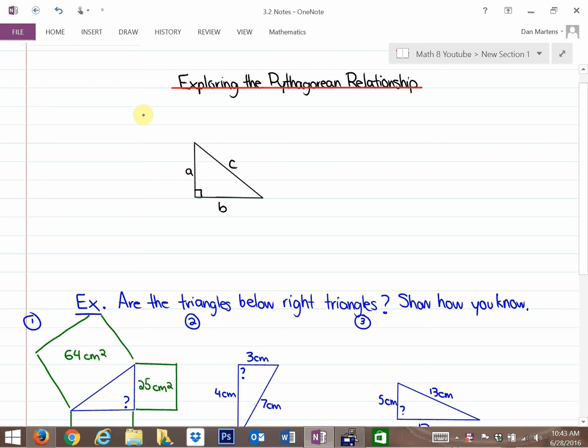In this lesson, we are going to be exploring the Pythagorean relationship. What you learned in this section was that there's a relationship. If you have a right triangle, and a right triangle has a 90 degree angle...